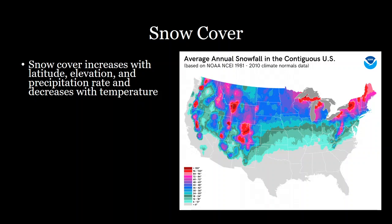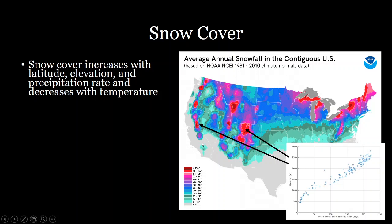Areas closer to the poles have colder conditions and therefore more snowfall. The lake effect can also add more moisture into the atmosphere — that's why we have so much snowfall right around the Great Lakes.